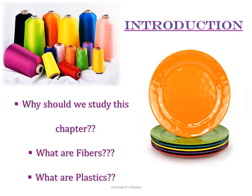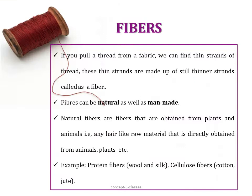What are fibers? If you pull a thread from a fabric, you can find thin strands of thread. These thin strands are made up of still thinner strands called fibers. A fabric is made up of a large number of thin fibers. Fibers can be natural as well as man-made. Natural fibers like cotton, wool, and silk are obtained from both plants and animals. Protein fibers are obtained from wool and silk, and cellulose fibers come from plants like cotton and jute.